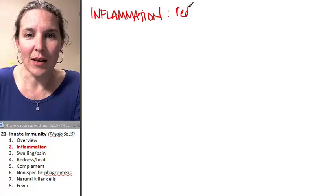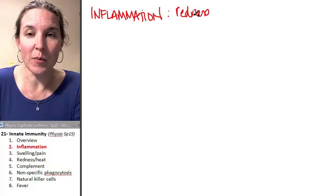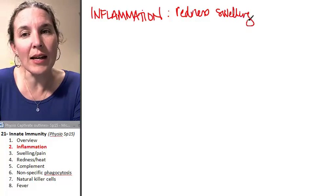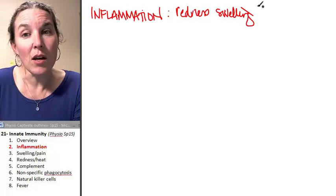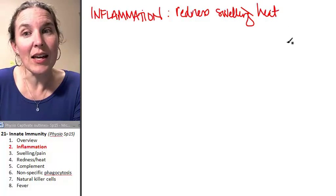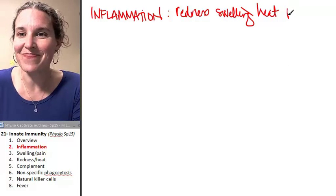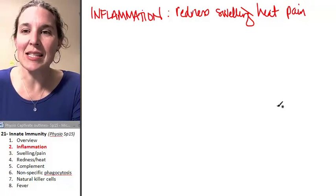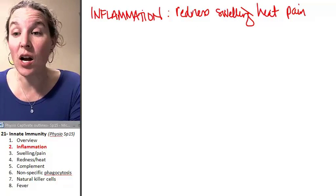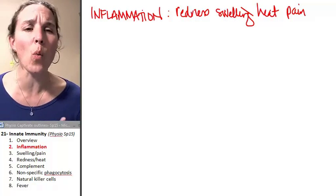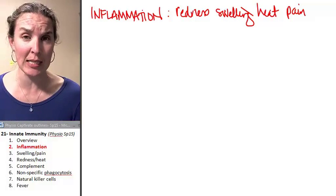Redness is one of the signs of inflammation. Swelling is one of the signs of inflammation. Heat is one of the signs of inflammation. These are the signs of inflammation. And we're going to talk about why. Why does an inflamed place get red?